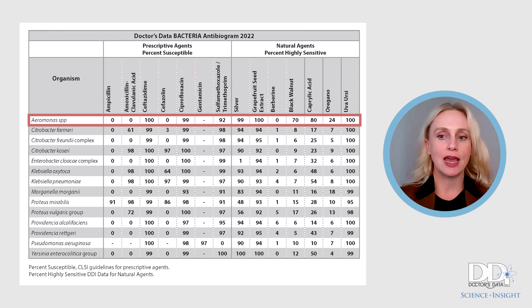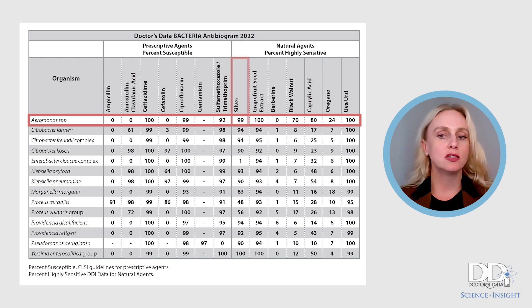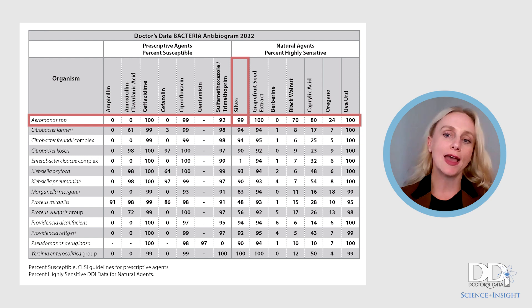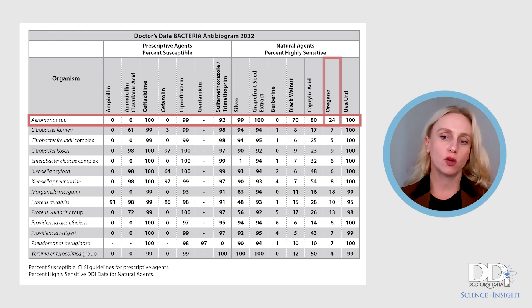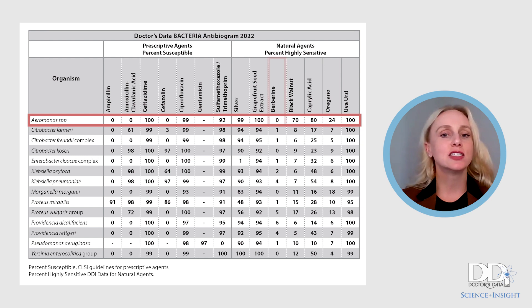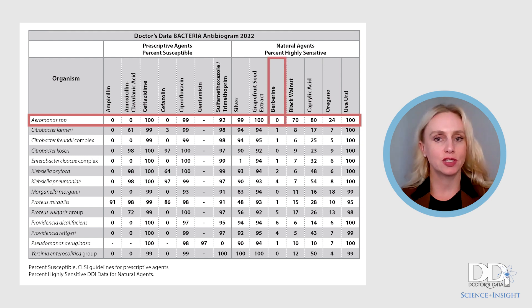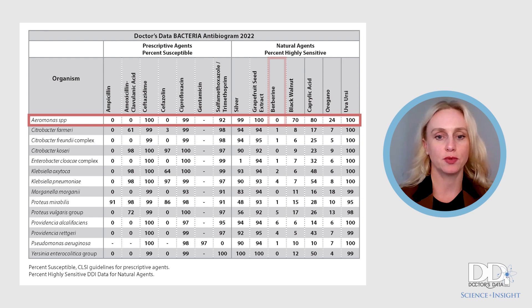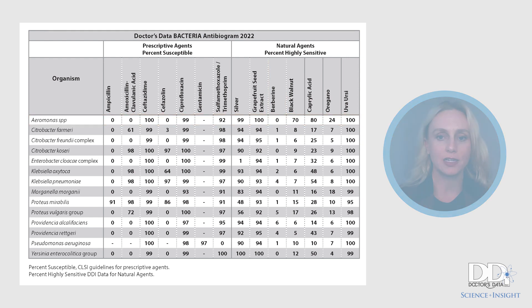With regards to the natural agents for Ereomonas, 99% of the samples tested were highly sensitive to silver, whereas 24% of the samples tested were sensitive to oregano, and 0% of the samples tested were sensitive to berberine. You will see the data listed for all 14 bacteria.